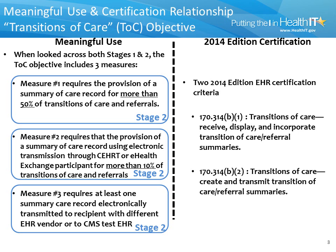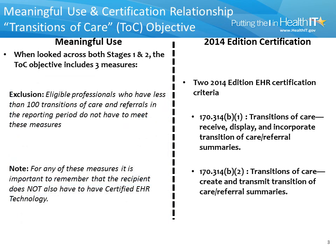The first measure, which was part of the original Stage 1 Final Rule, can be met through a combination of paper and electronic exchange transmissions. The second measure, which is only required of eligible providers in Stage 2, can only be met through electronic exchange. More specifically, an eligible provider must use their certified EHR technology or an eHealth Exchange participant to successfully transmit a summary care record for more than 10% of transitions of care and referrals. The third measure, also only required in Stage 2, can be satisfied in two ways: electronically transmitting a summary care record to a recipient with a different EHR technology vendor, or conducting an electronic transmission test with a CMS-designated Test EHR. Eligible providers who have less than 100 transitions of care and referrals in their reporting period do not have to meet these measures.